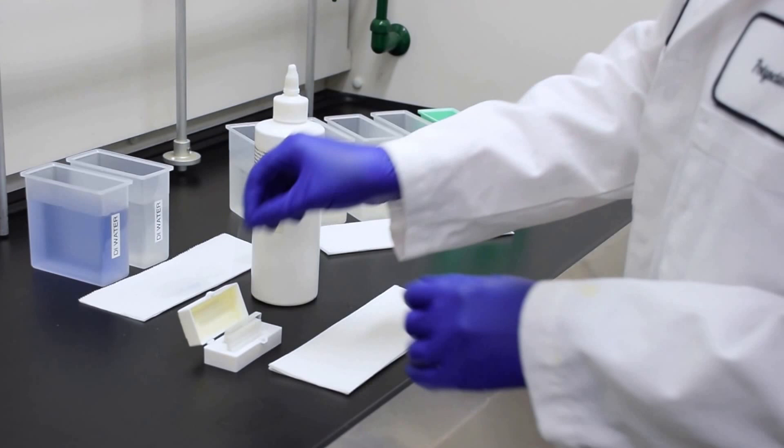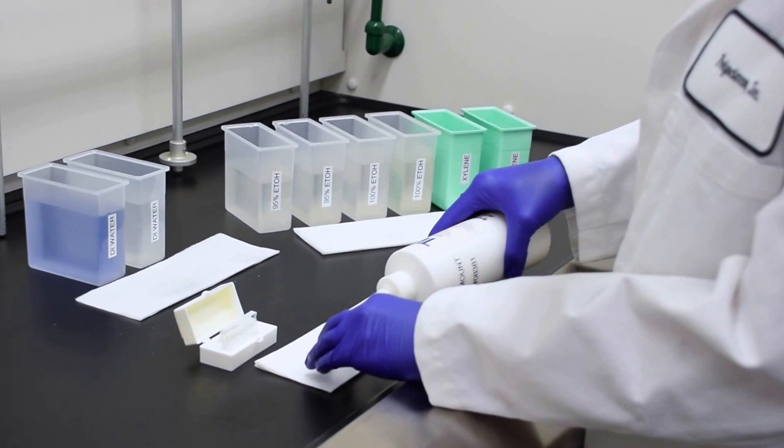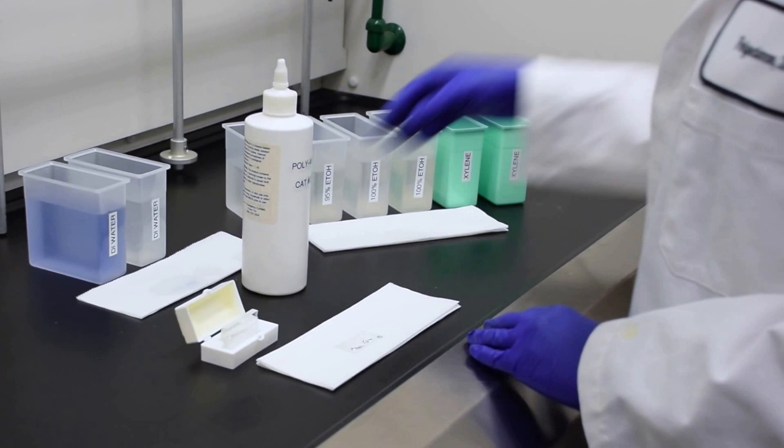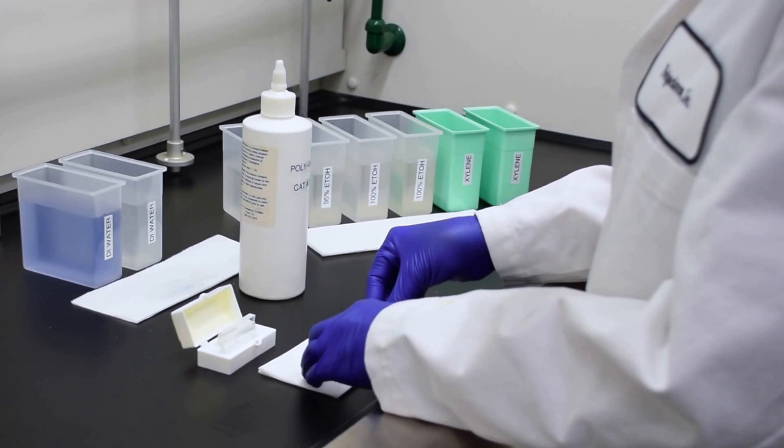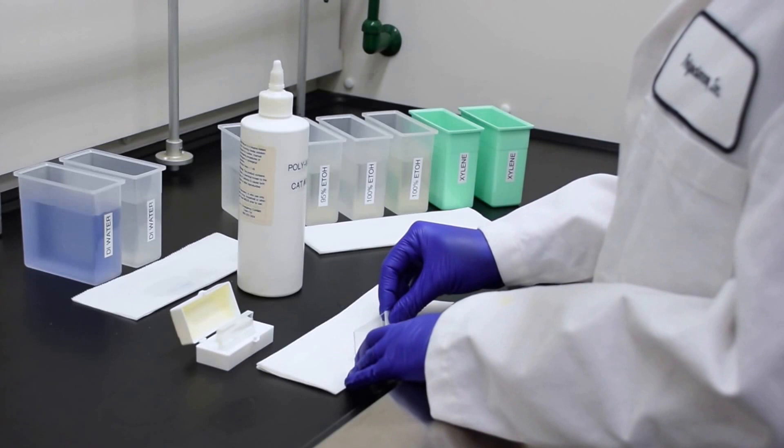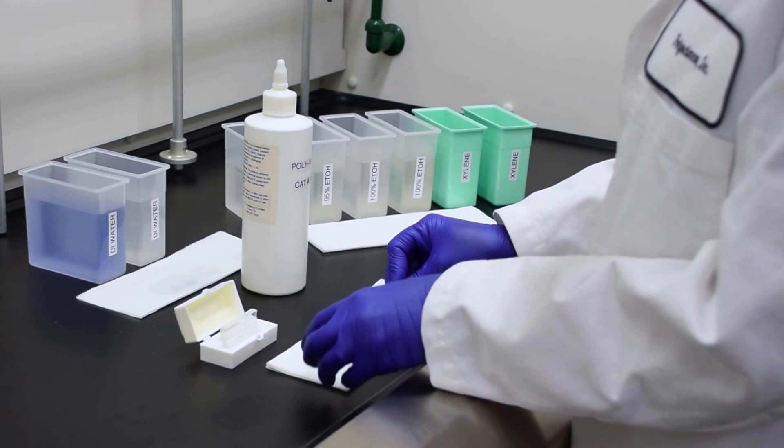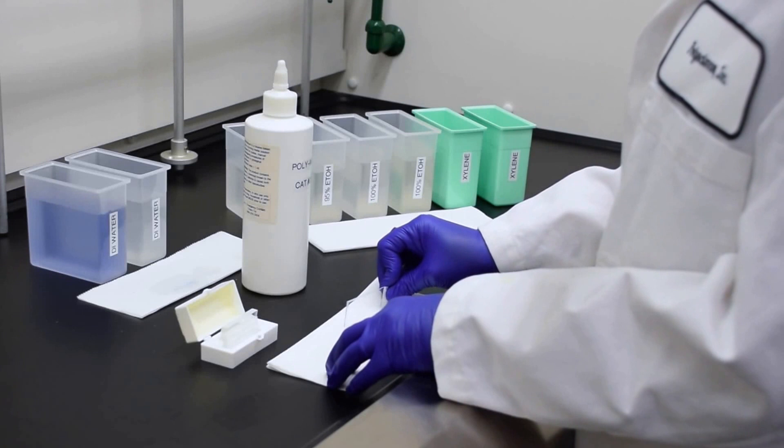Taking a glass coverslip, apply your polymer mounting media to the coverslip. Remove your slide from the xylene and carefully mount your slide, removing any excess mounting media.